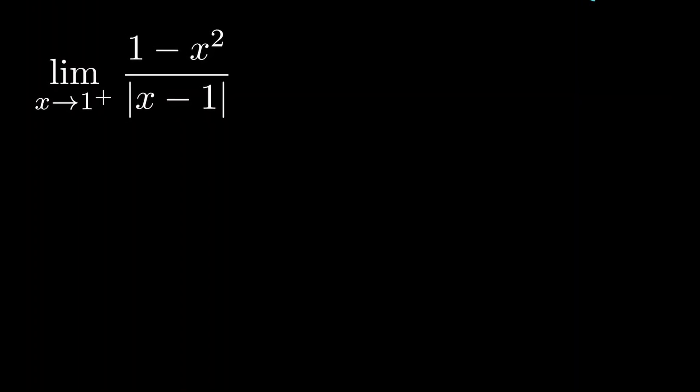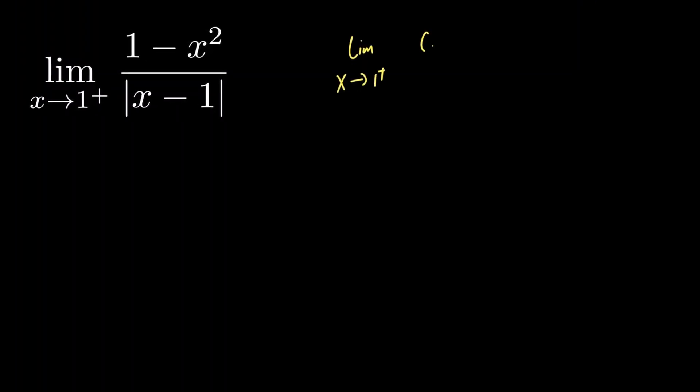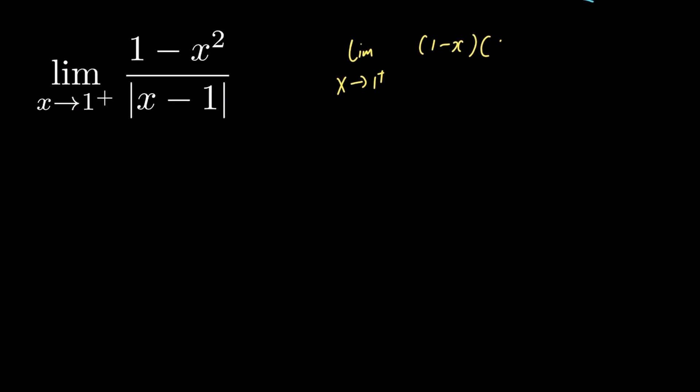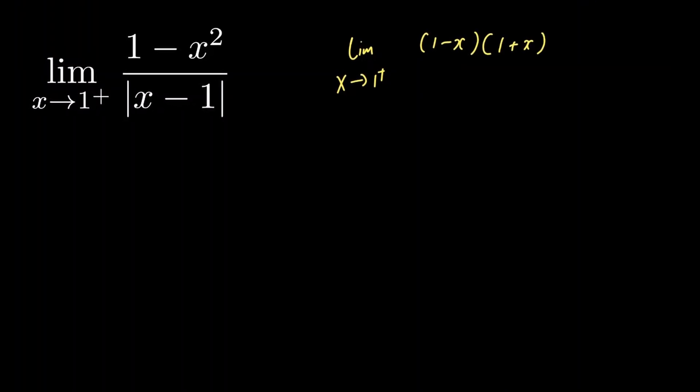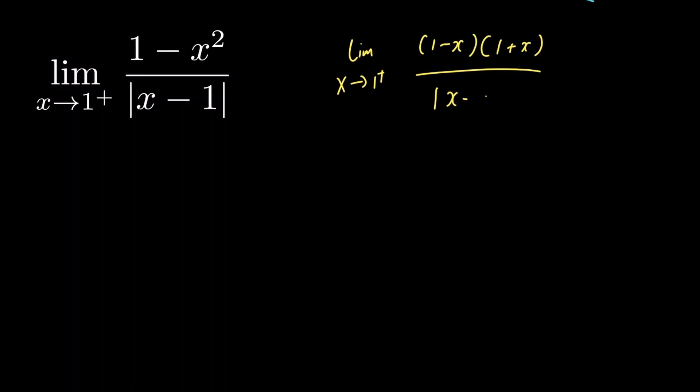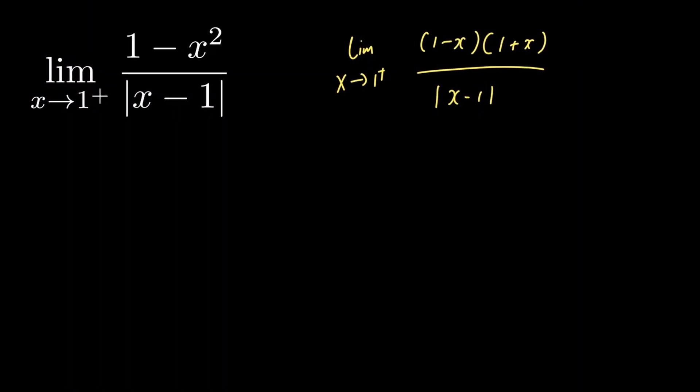Let's begin by rewriting our numerator in the following way. We have the limit as x approaches 1 from the right of 1 minus x multiplied by 1 plus x divided by the absolute value of x minus 1. Now in order to progress,